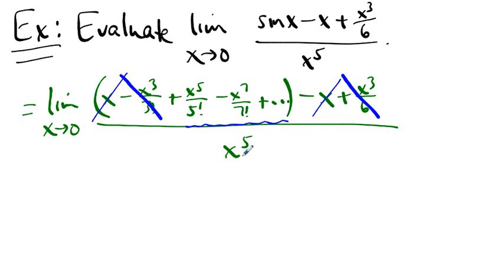So we get this power series divided by x to the fifth. Well, what does that mean? That means that when we divide by x to the fifth, the power on x goes down by five, the power on x goes down by five, and you get one over five factorial.